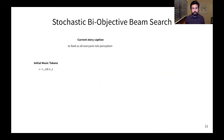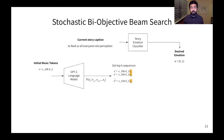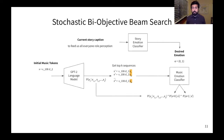With both the story and the music emotion classifiers, we can now talk about the stochastic bi-objective beam search, which is the main contribution of this paper. It starts by taking the current story caption and feeding that into the story emotion classifier to get a desired emotion. In this case, E equals to zero one. We then take the initial music tokens, for example X with two tokens, and we feed that into the language model. And we get the probability of the next token in the sequence. Using this probability distribution, we select the top K sequences and we feed them into the music emotion classifier. What we get is the probability distribution of each of these top K sequences being of valence equals to zero and the probability of these top K sequences being of arousal equals to one. We then combine or multiply those two probability distributions with the probability distribution given by the language model.